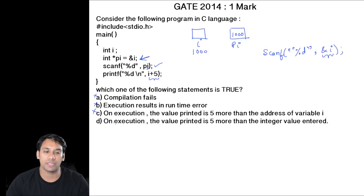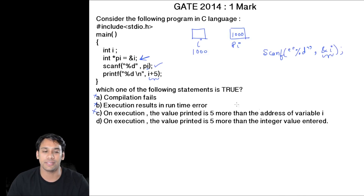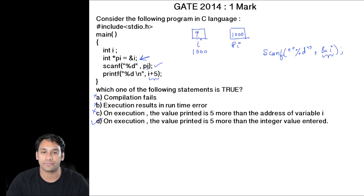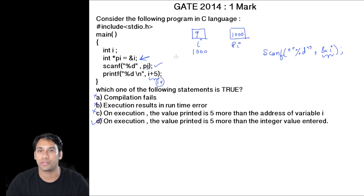Option D: on execution the value printed is 5 more than the integer value entered — this is the correct option. For example, if the user entered 9, then when we print the value it will print 9 plus 5 as 14. So option D is correct.